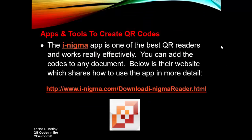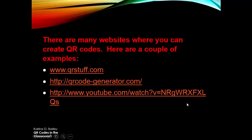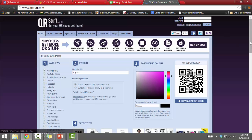Now, the kinds of apps and tools to create QR codes. One of my favourite apps is Enigma — it's free and easily downloadable on your iPad, iPhone, or Android device. You can add the codes to any document and they also have a website where you can read up on how to use the app in more detail. There are also lots of different websites where you can create QR codes. One of my favourites is qrstuff.com — let's take a quick look at that. It's a free website and you don't have to pay for it.